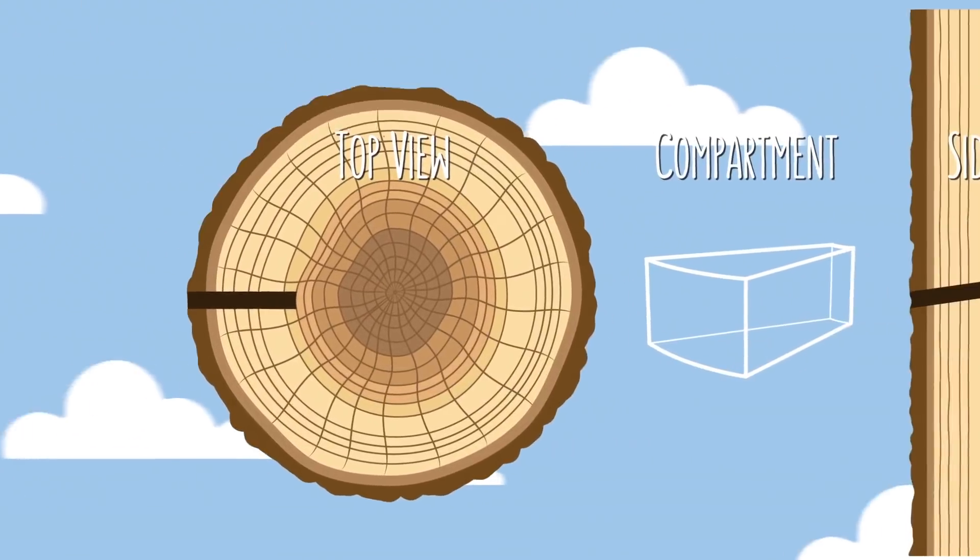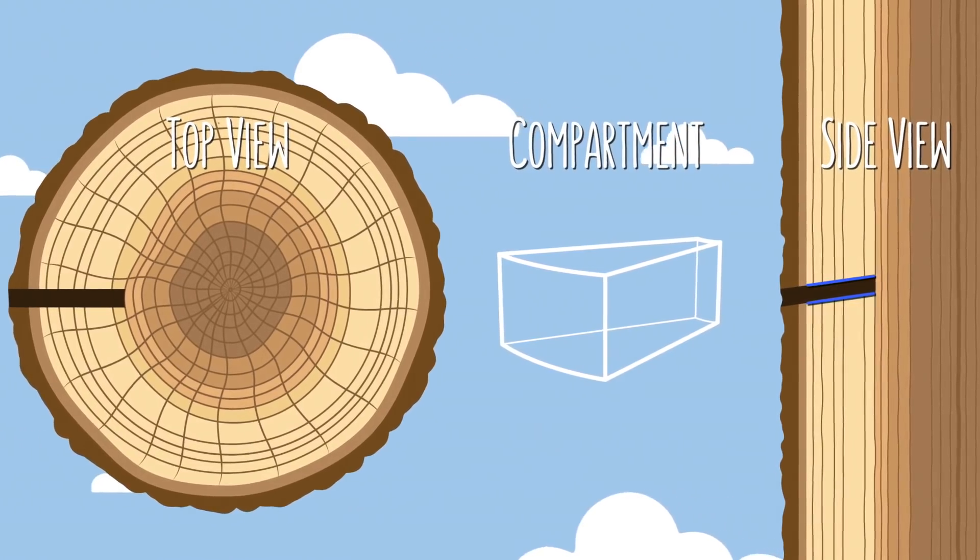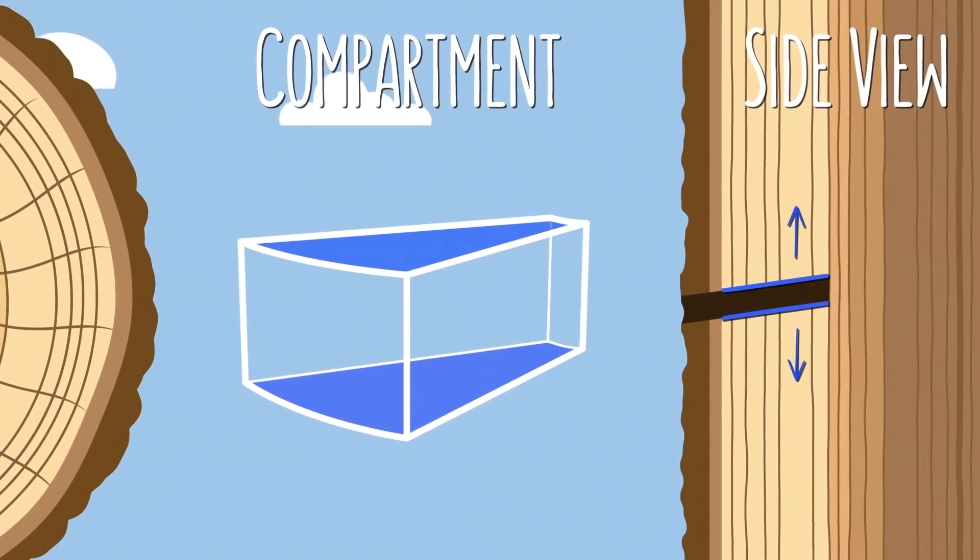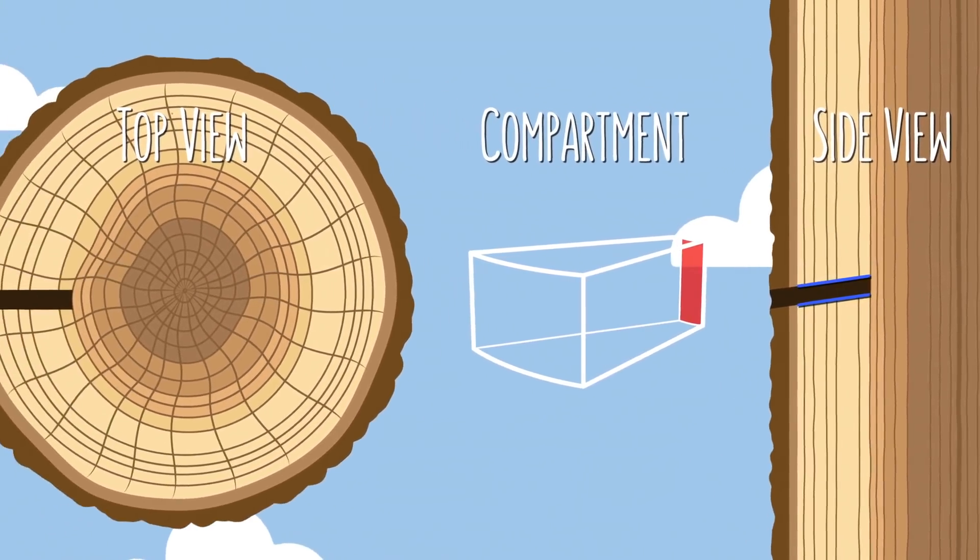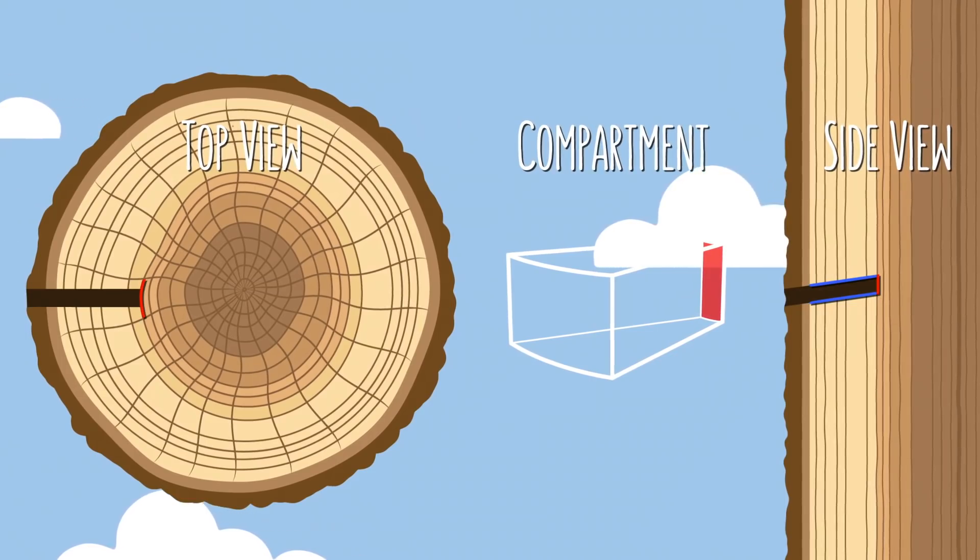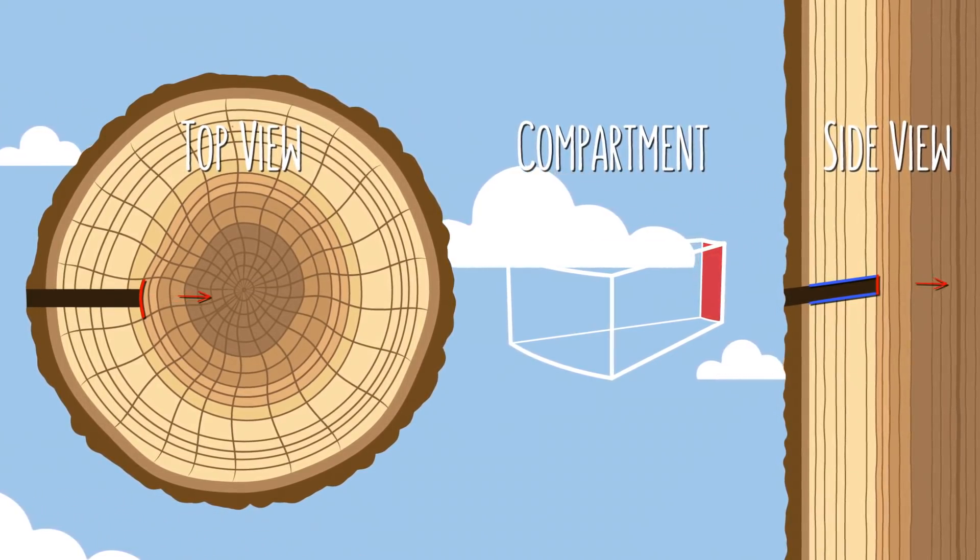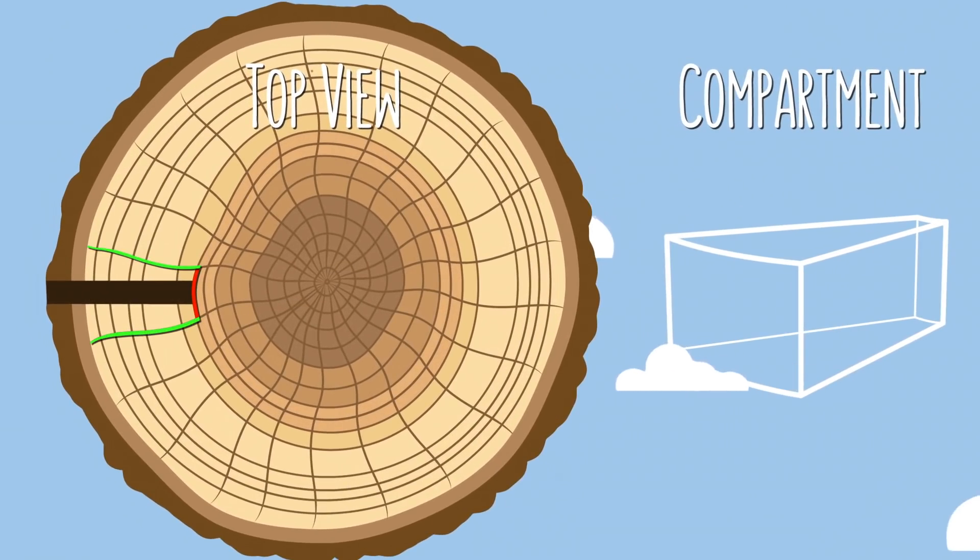The first step of compartmentalization is that gumming up of the cells above and below the wound. These form the top and bottom walls of the compartment, and help to stop the spread of decay up and down the trunk. Next comes the back wall, which is actually just the outermost undamaged growth ring. This helps stop the spread of fungus and decay further into the center of the tree. And then we have the ray cells, the ones that divide the tree like the slices of a pie. They form the side walls, and help prevent decay from progressing around the trunk.